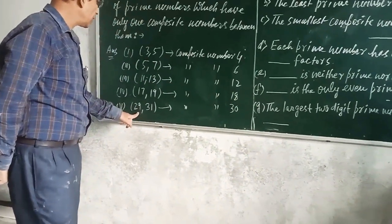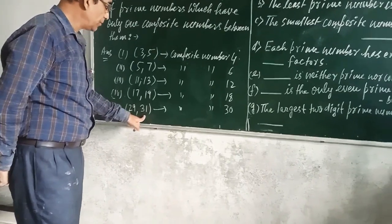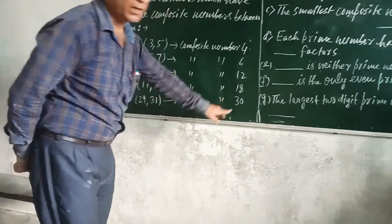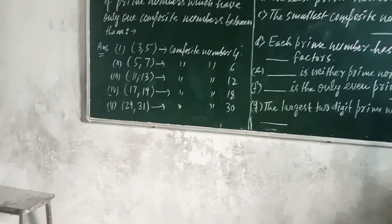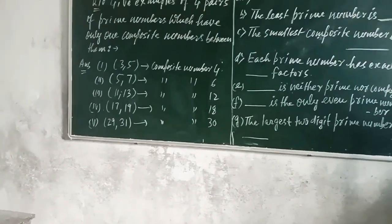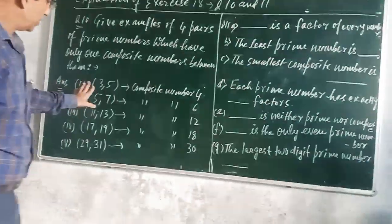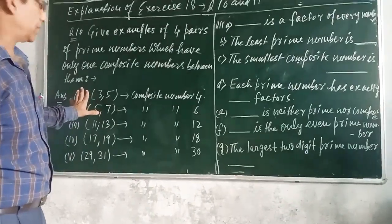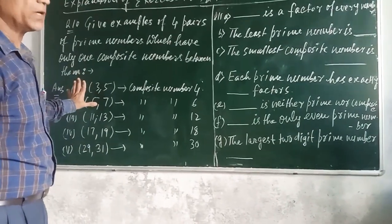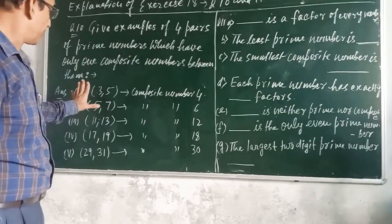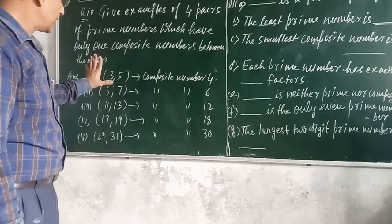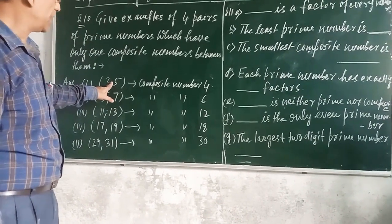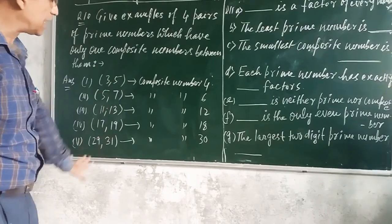Then 29, 31 because there is only composite number 30 between them. So, you have to select 4 or 5 pairs of prime numbers which have only one composite number between them. These are the examples.